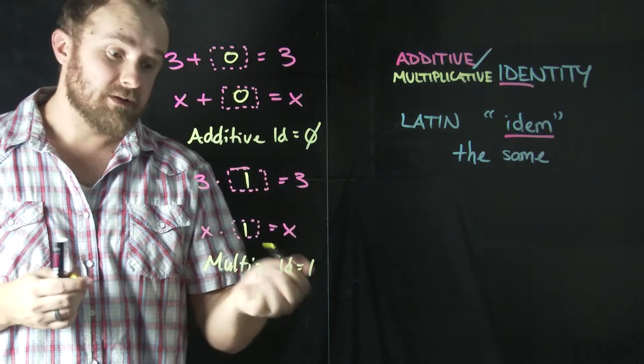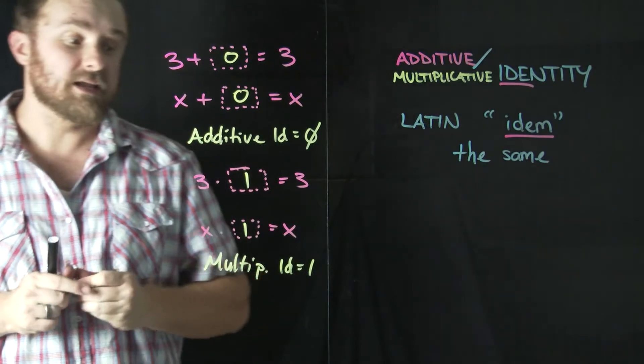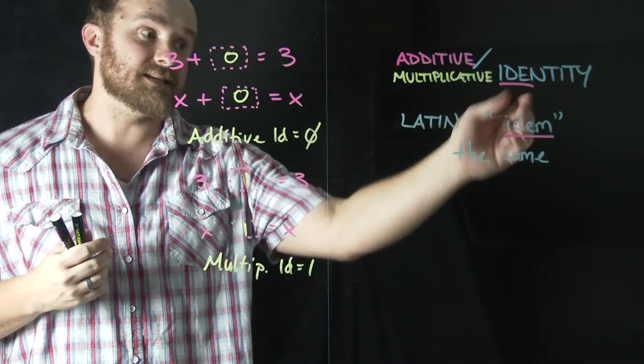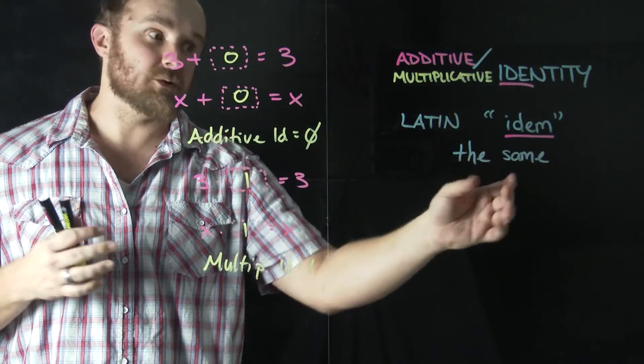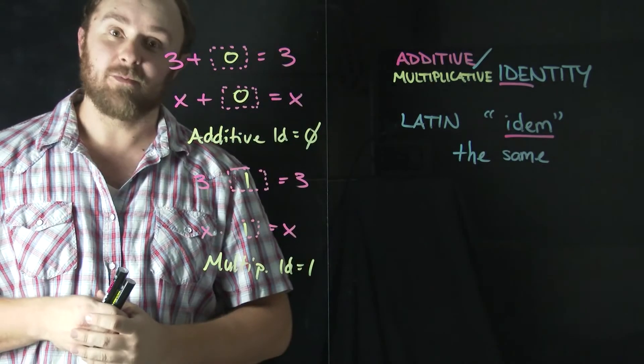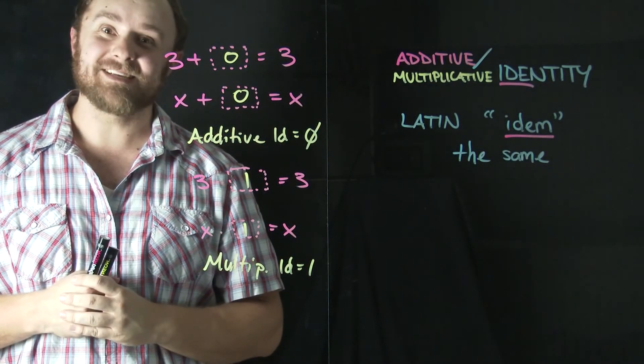So the additive identity is zero. The multiplicative identity is one. In general, a number's identity, whatever is happening to it, has to make sure that that number stays the same, whether we're adding or multiplying. I hope this video was helpful and thanks for watching.